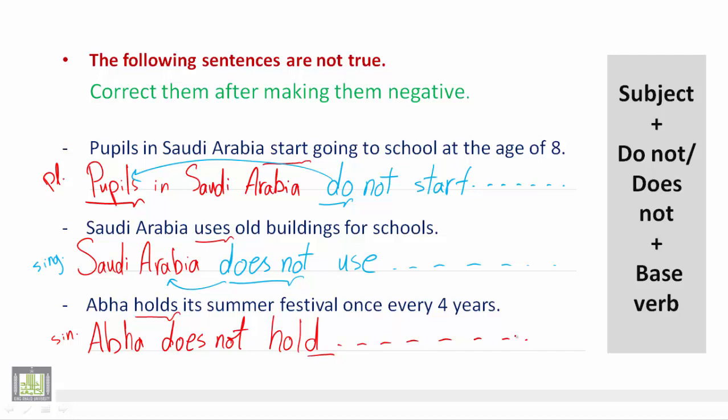So we always have subject-verb agreement — دائما لدينا توافق عدد بين الفاعل والفعل. If the subject is singular, we use 'does'; if the subject is plural, we use 'do.' Thank you very much for your careful listening.